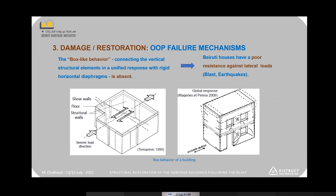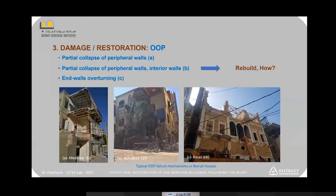To start with the out-of-plane failure mechanism, it is worth mentioning that to achieve lateral resistance in a building we need to understand box behavior, which consists of connecting vertical elements like walls in a unified response due to the presence of a rigid horizontal diaphragm — we are talking about slabs. Unfortunately, this rigid diaphragm and box behavior are absent in Beiruti houses, which explains the level of damage observed.